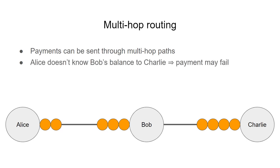The problem with this approach is that Alice doesn't know in advance whether Bob has sufficient balance in his channel to Charlie. For example, if Alice tries to repeat the payment, the payment will fail because Bob has no more coins on his side in the channel to Charlie.